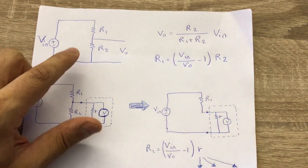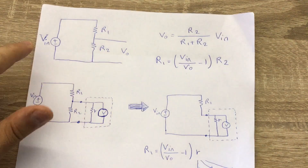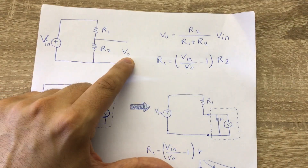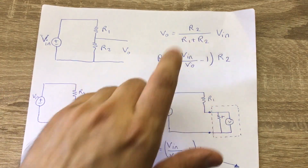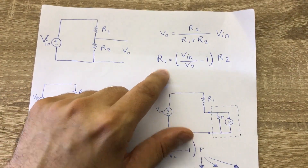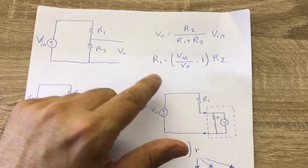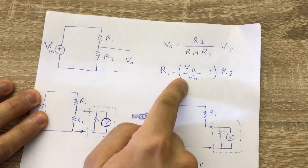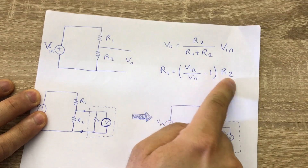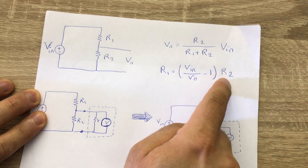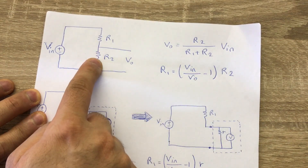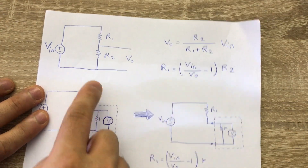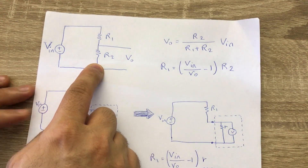Assume that we know R2, we know the input voltage, and we can measure the output voltage. If you rearrange this equation you can calculate R1. So we know V_in, we know V_out, and since we select R2 ourselves, we know that too — and from those we can calculate R1.